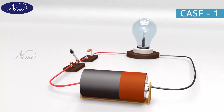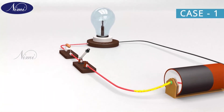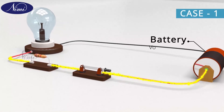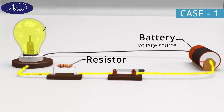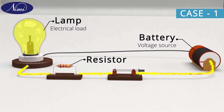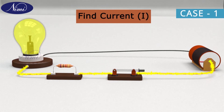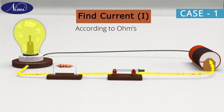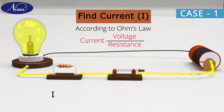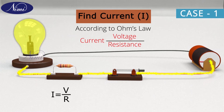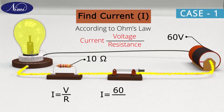In case 1, you could see an electrical circuit containing a battery as a voltage source, a resistor and lamp as an electrical load. You are asked to find the current rating in the circuit. According to Ohm's law, current is voltage by resistance, that is I is equal to V by R. By simply substituting the values of voltage and resistance in the formula, we obtain I as 6 amps.